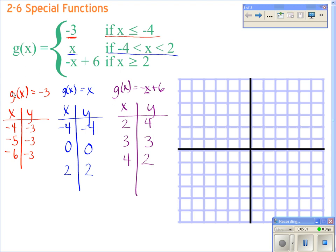I'm going to plot these three points: negative 4, negative 3, negative 5, negative 3, negative 6, negative 3. I'm going to connect them and draw an arrow to the left because it's all the numbers that are less than negative 4. So it's going to go forever in that direction. Now we do have a closed circle right here because we have a less than or equal to.